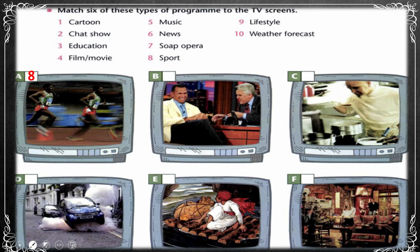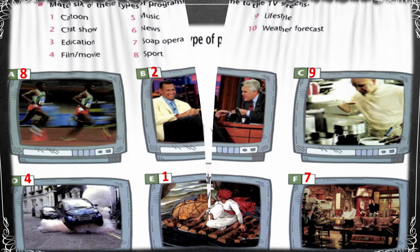The matching answers: photo A matches number 8, which is sport. B matches number 2, chat show — برنامج حواري. C matches number 9, lifestyle — نمط الحياة. D matches number 4, film or movie. E matches number 1, cartoon. F matches number 7, soap opera — مثل مسلسل Friends الذي هو نوع من أنواع الـ soap opera.